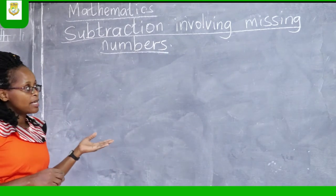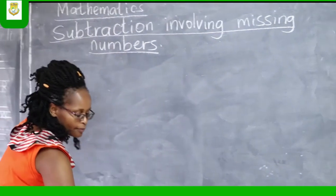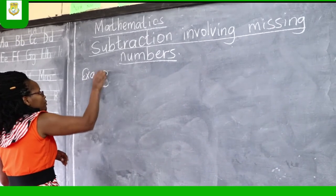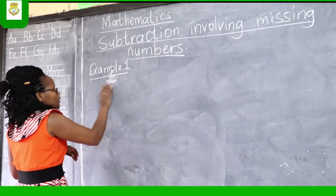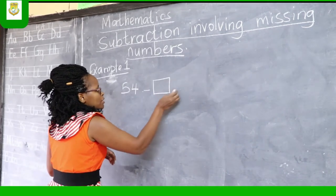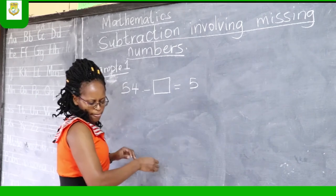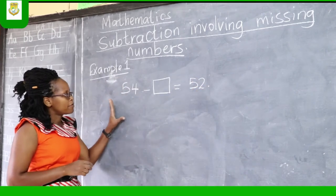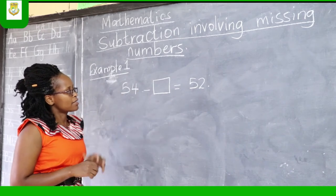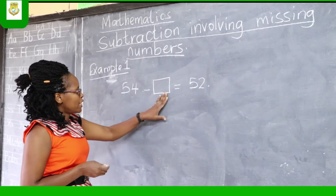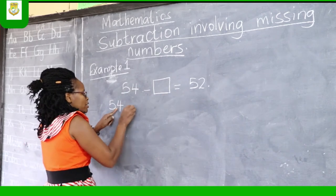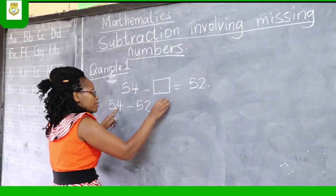Now, subtraction involving missing numbers. Let's take case number 1: 54 take away box equals 52. The box here is the missing figure — that is what we are to find out. To find out this, 54 take away box equals 52 can be rewritten as 54 take away 52 equals box.